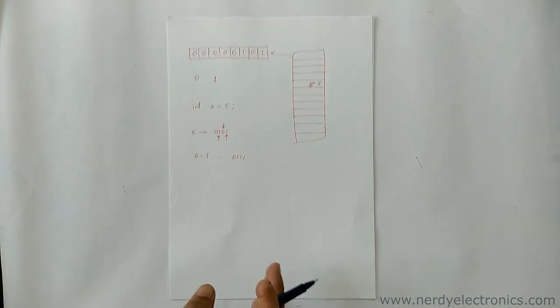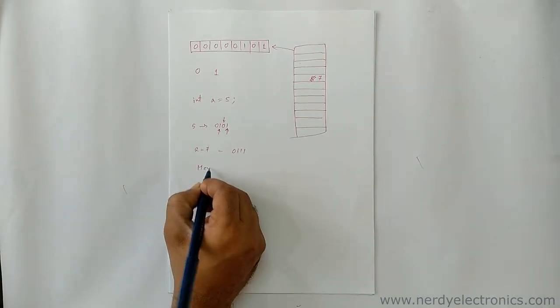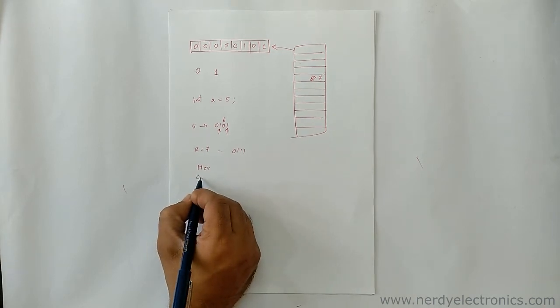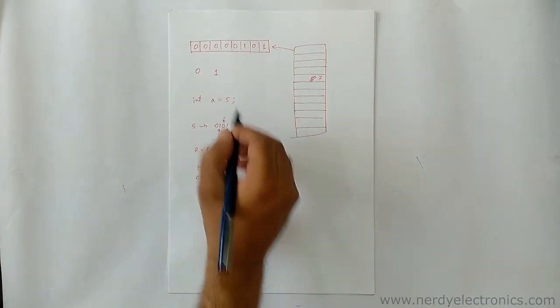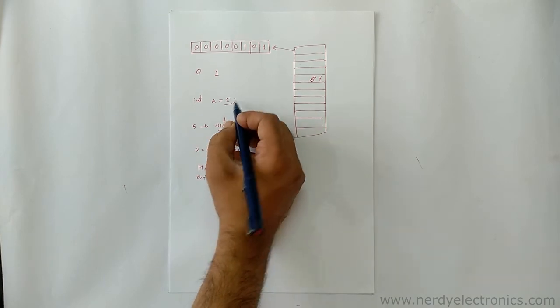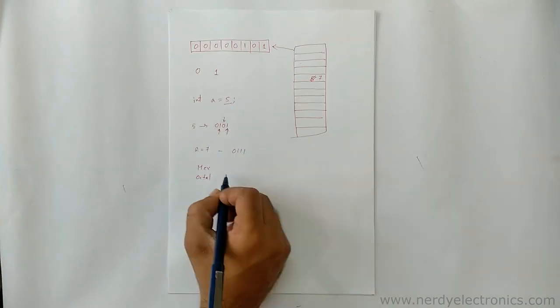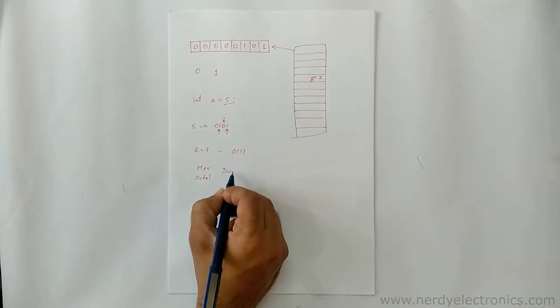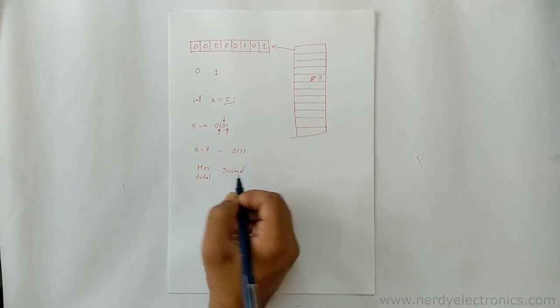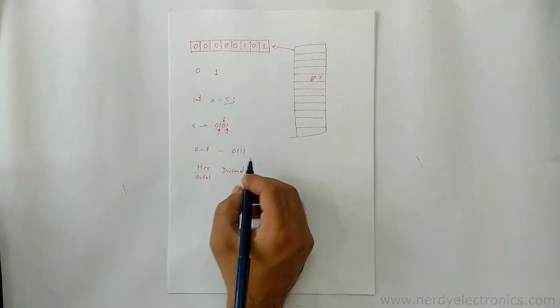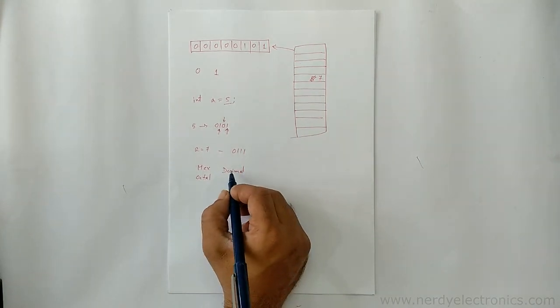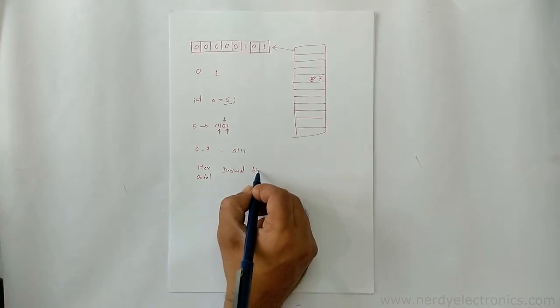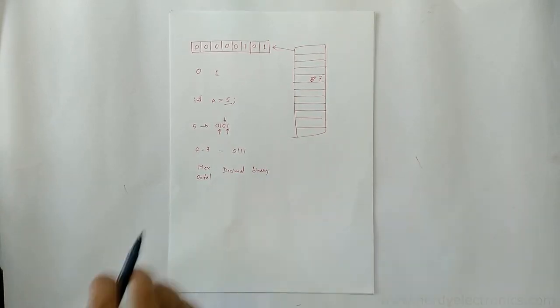There are other representation forms also like hexadecimal or octal. These numbers, the numbers that we use in daily life like 5, 7, these are called the decimal numbers. Most commonly used in memory systems are decimal, hex, and binary. We will look into all this in the next video.